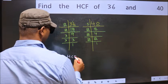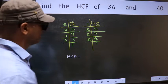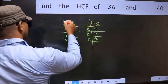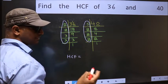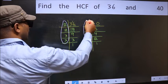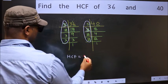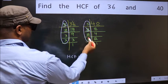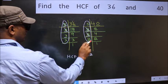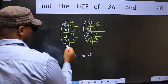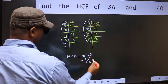Therefore, our HCF is the product of the numbers which should be present in both factorizations — here and also here. Starting with the number 2: do we have 2 here? Yes. So cut 2. Next number 3: do we have 3 here? No. So our HCF is 2 times 2, which is 4.